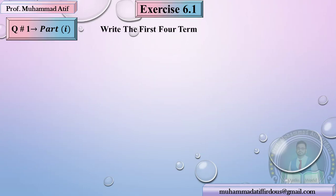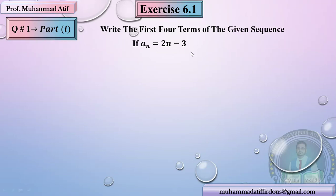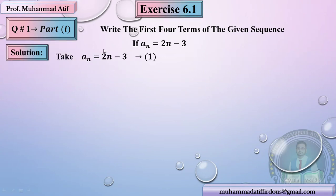Question number one, part one: Write the first four terms of the following sequence. The sequence given is a_n = 2n − 3. You have to find the first four terms. So let's do it. First, let me give you a good presentation. Otherwise this is the answer — but let me show it properly.